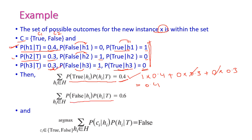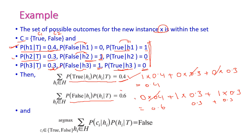Now we calculate the same for the false class: P(false | T) = (0 × 0.4) + (1 × 0.3) + (1 × 0.3) = 0 + 0.3 + 0.3 = 0.6. Comparing the two classes: the true value is 0.4 and the false value is 0.6. The maximum is the false value, so the new instance X is classified as false.